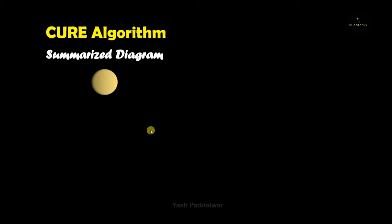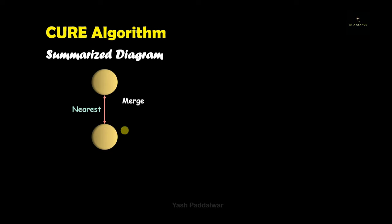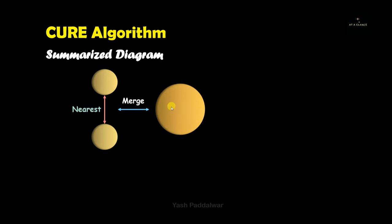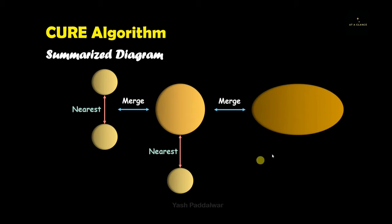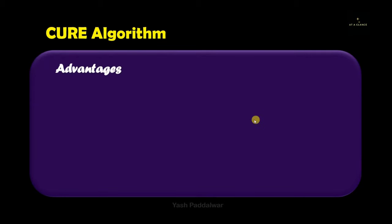Now let's see a summarized diagram of the CURE algorithm. Consider two data points inside a cluster — check whether they are nearest to each other, meaning they satisfy the d_minimum threshold condition. If satisfied, merge them into a single big cluster. Then considering that cluster and a new data point from the dataset, if the distance between the cluster's representatives and the new data point satisfies the minimum threshold, merge them to create a new bigger cluster. In summary: two nearest data points can be merged; a cluster and a nearest data point can also be merged.